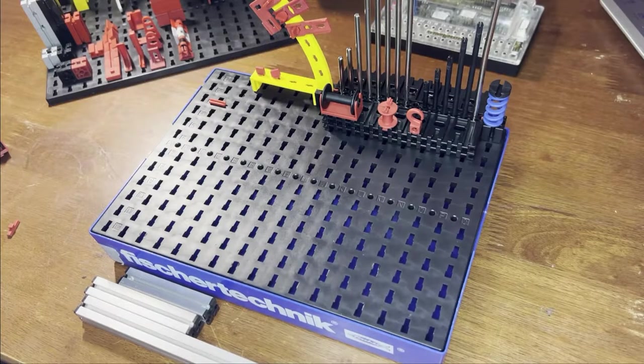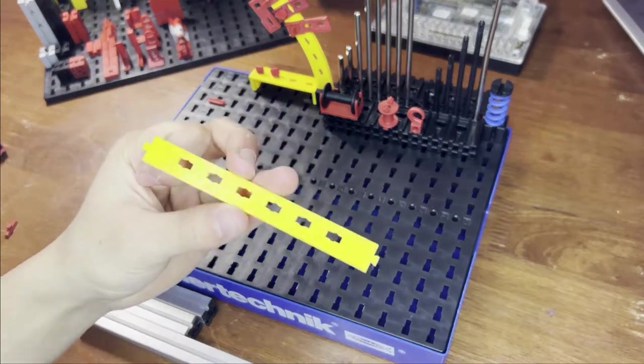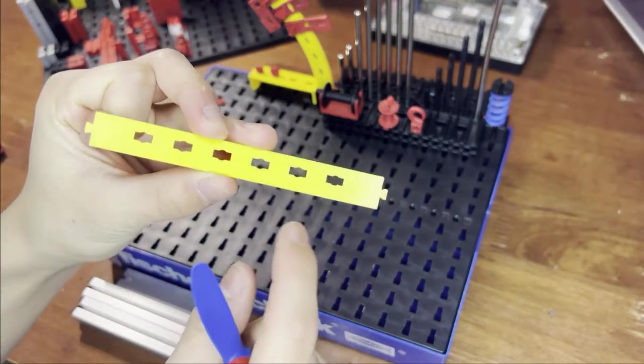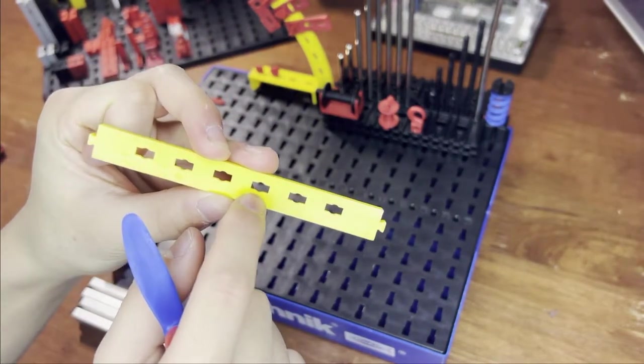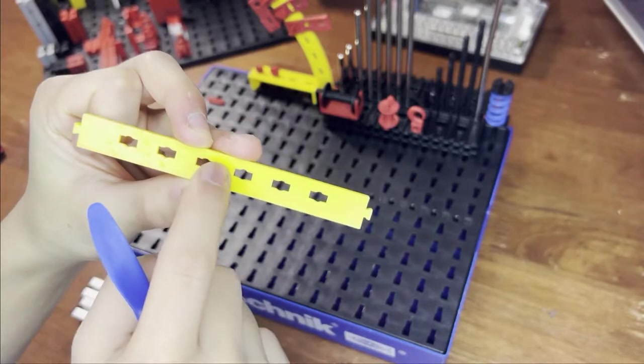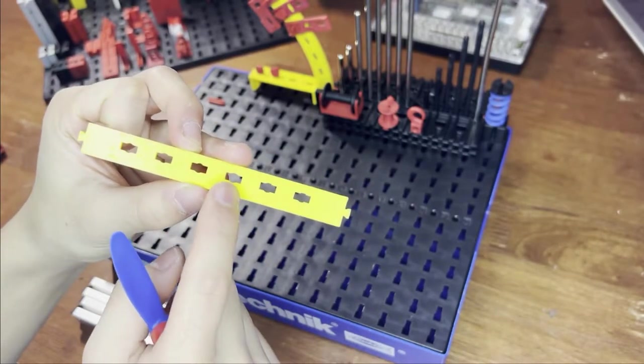Now, I want to bring back this part right here. This is called a strut. And you can see that it has these holes that axles can go inside, but it also has these rectangle holes. And these holes are meant for rivets.